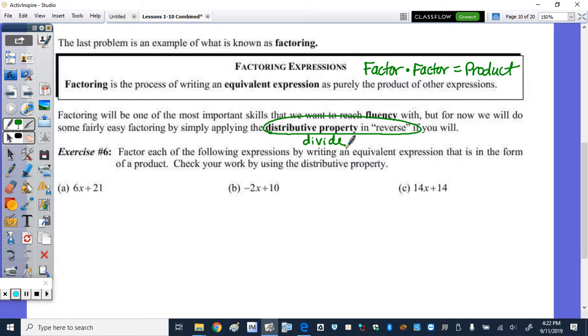So what we're going to do to go backwards is divide. The directions in exercise 6 say to factor each of the following expressions by writing an equivalent expression that is in the form of a product. And we can check our work by using the distributive property. So if we're going to go backwards, we want to ask ourselves, what can we divide both 6 and 21 by? And not only what number, it needs to be the largest number.